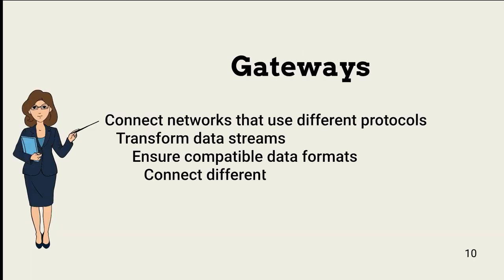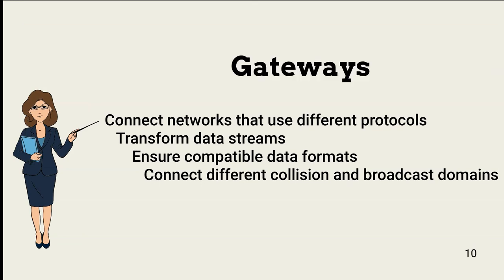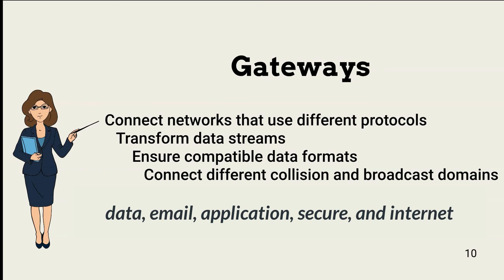Gateways connect networks that use different protocols, so they are often called protocol translators. They operate at OSI layer 7, with some agreement that they also operate at layer 6. According to the CISSP Common Body of Knowledge, a gateway transforms the format of one data stream from one network to a compatible format used by the second network. In addition to protocol translation, gateways can connect systems on different broadcast or collision domains. Different types of gateways include data, email, application, secure, and internet.